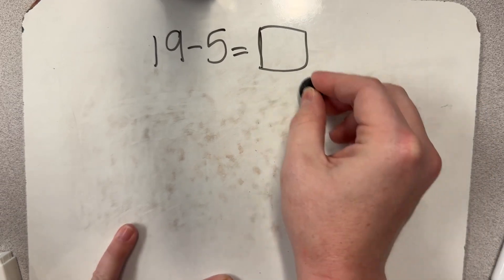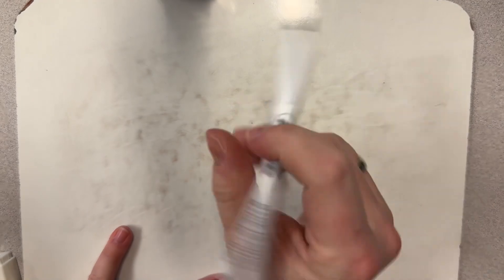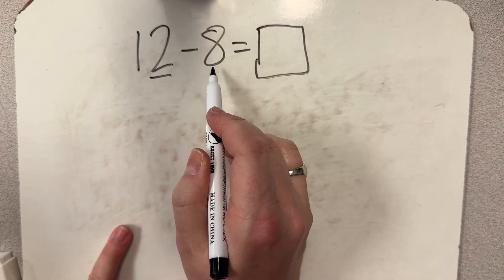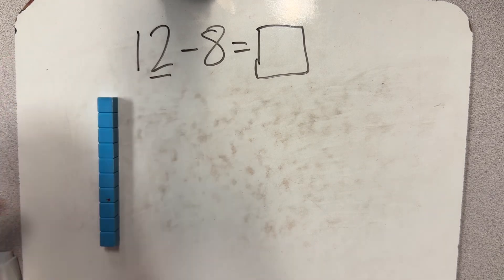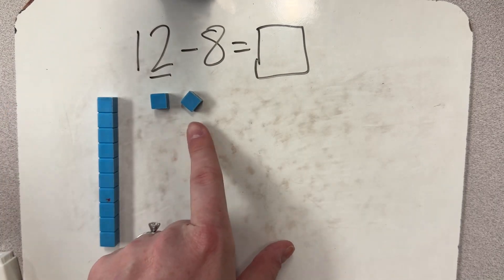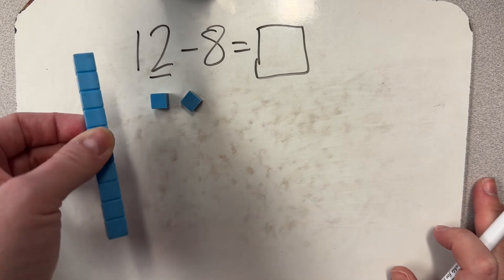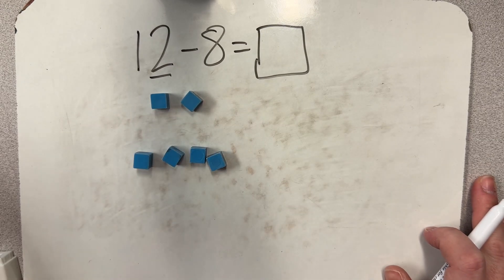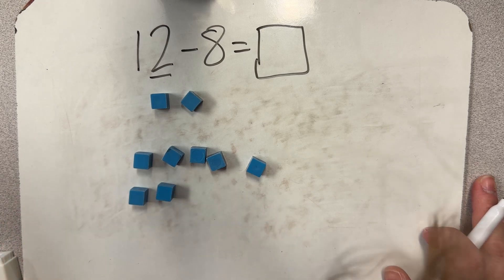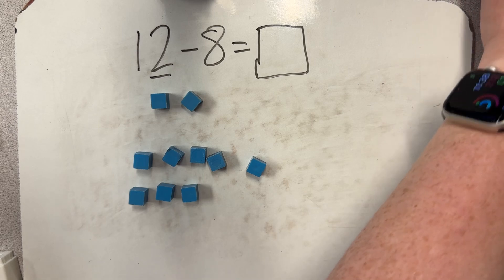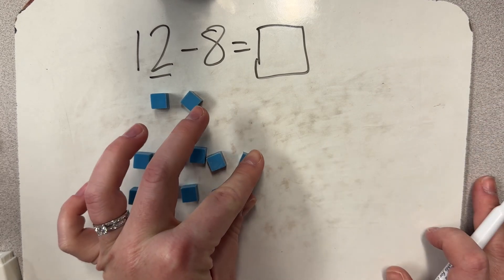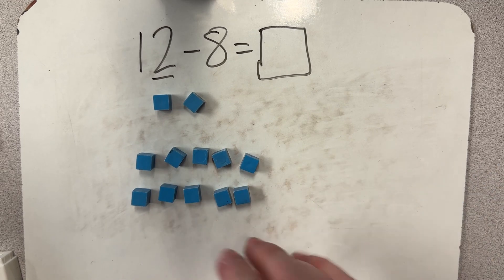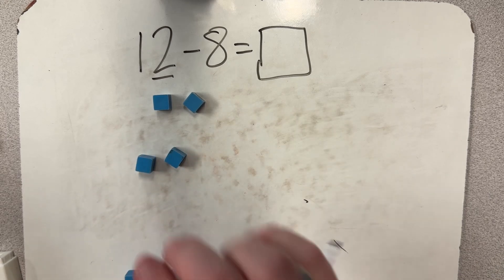In this next problem, however, we do not have enough ones. And so we are going to show you how we would decompose that. So we're going to do 12 minus eight. Here I have two ones, but I need to take eight away. So when I go to do that, use these tools right here. I don't have eight ones to take away. I only have two. So I would take one of my tens and I would break it up into 10 ones. I would rebuild that with that invisible 10 frame in mind because I want to make sure that I always can see that 10 as five and five or two rows of five. So now I have 12. Here's my group of 10 and two ones. Now I can take eight away. So here's five and three more is eight. I only have four left over.